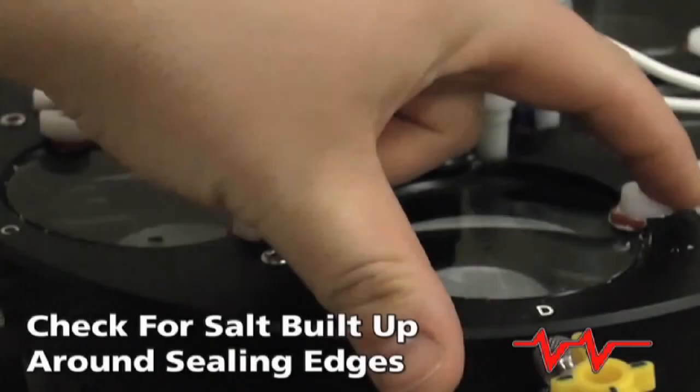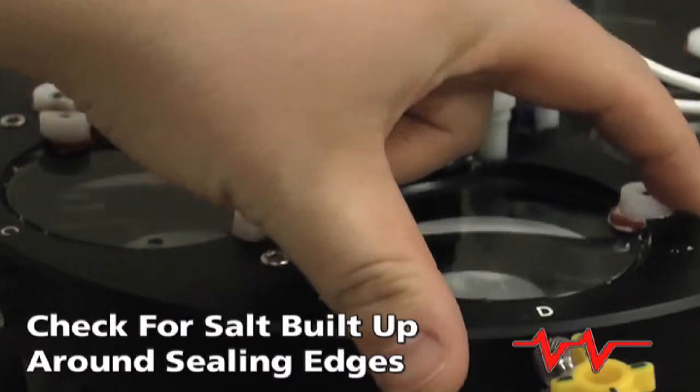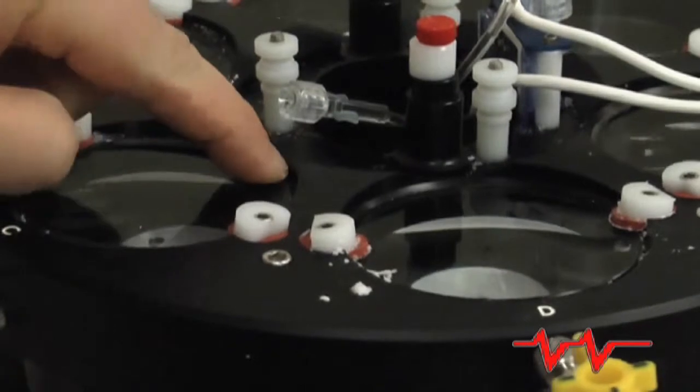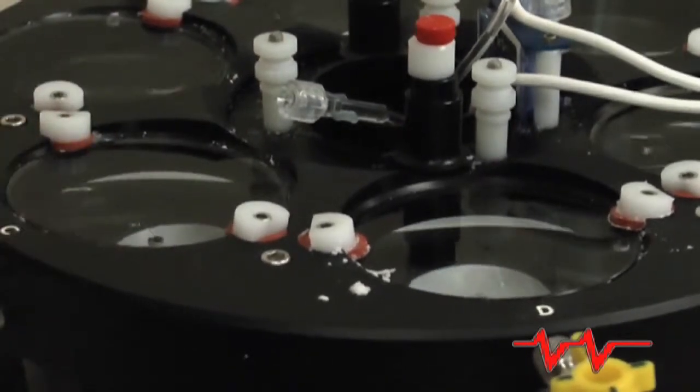Check for salt buildup around sealing edges, like chamber windows, drain ports, and the scan valve. If there is salt built up, it means fluid is getting out. If fluid can get out, air can get in.